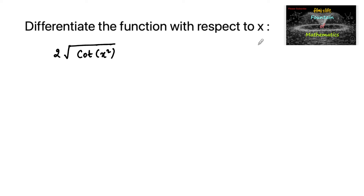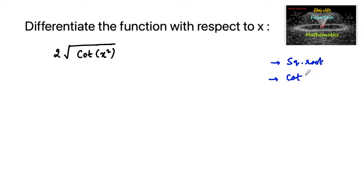We differentiate the function 2√(cot(x²)) with respect to x. This is a composition of different functions: first the square root function, then the cot function, and then x². So let us apply the chain rule in a sequential way.